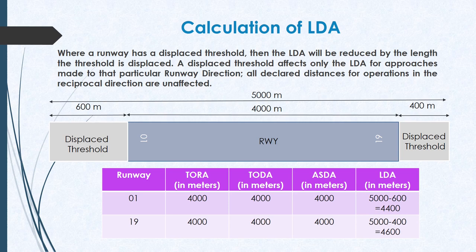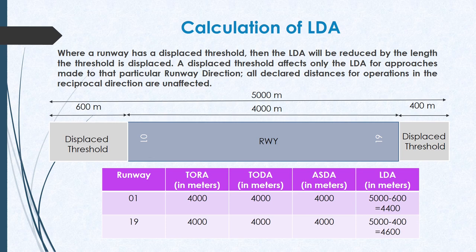Now considering runway 19, the aircraft comes in for approach and finds that the threshold of runway 19 is displaced by 400 meters. So the remaining runway length is available for landing. The LDA here becomes 4000 plus 600, that is 4600 meters — or the total length of 5000 meters minus 400 meters, that is 4600 meters. I hope we have now understood all four runway declared distances.